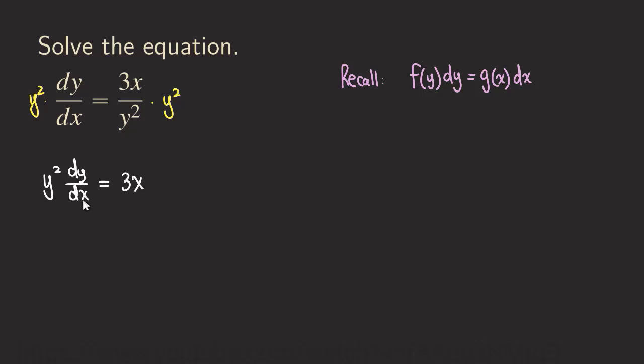Next step is that we can get the dx on this side by multiplying both sides by dx. You can see that the dx will cancel on the left side, and then we just have the dx on the right side.